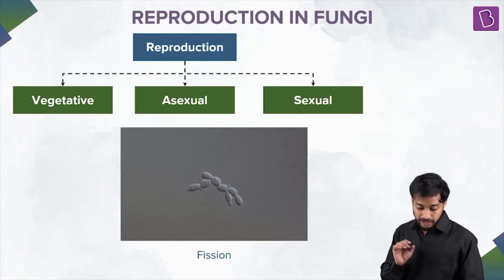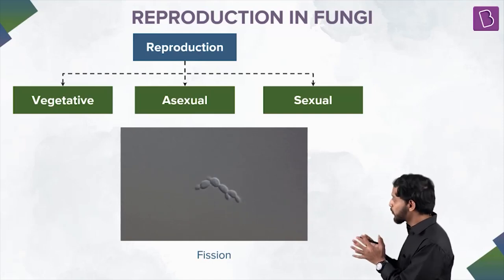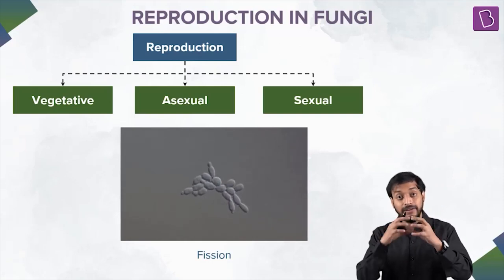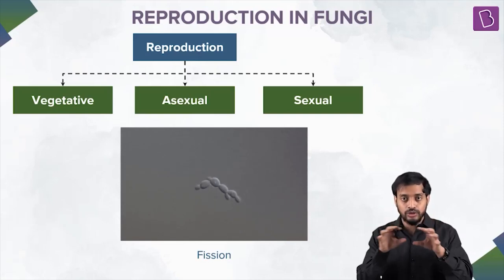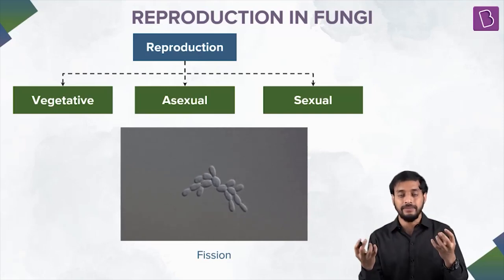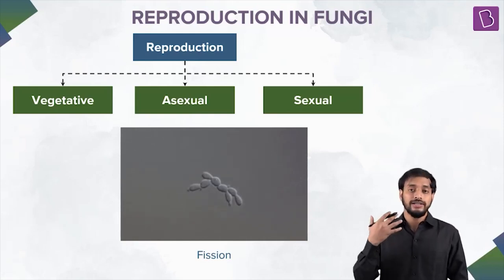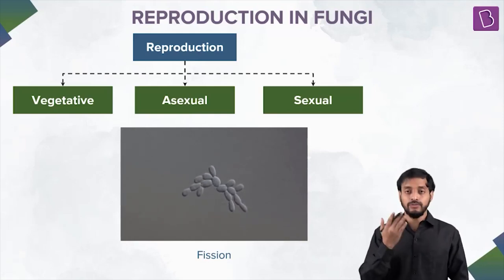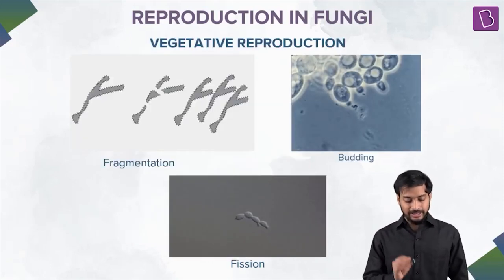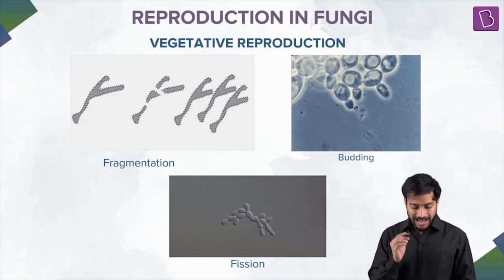Next is fission. Observe carefully — fission is the process in which the cells grow, the genetic material replicates, and it is passed on to two new cells. Then it pinches off and separates. This is the vegetative mode of reproduction known as fission. So the three types of vegetative reproduction in fungi are fragmentation, budding, and fission.